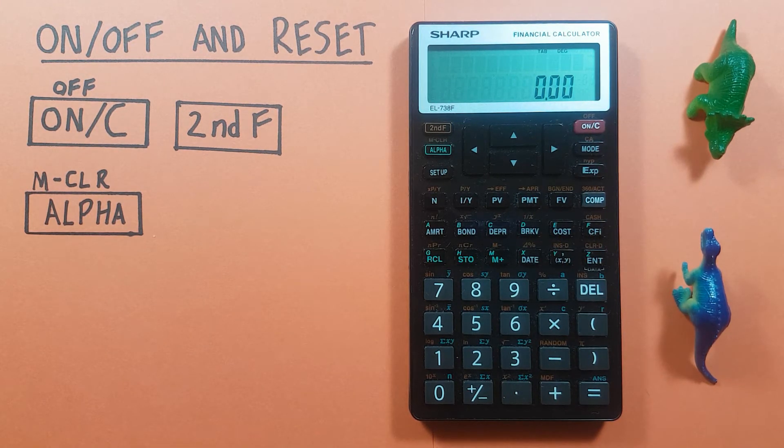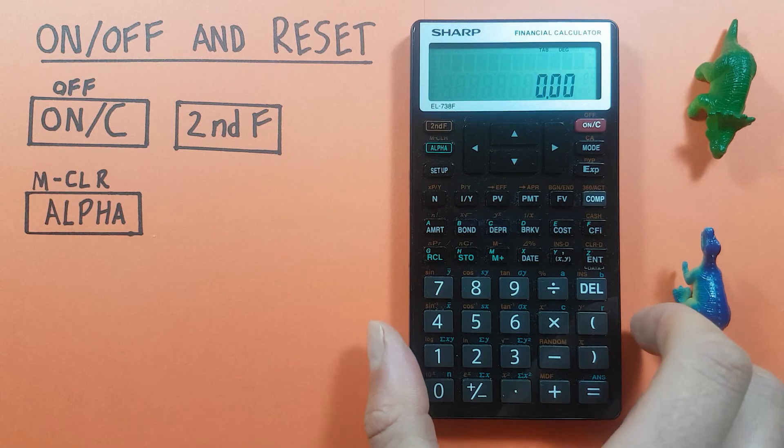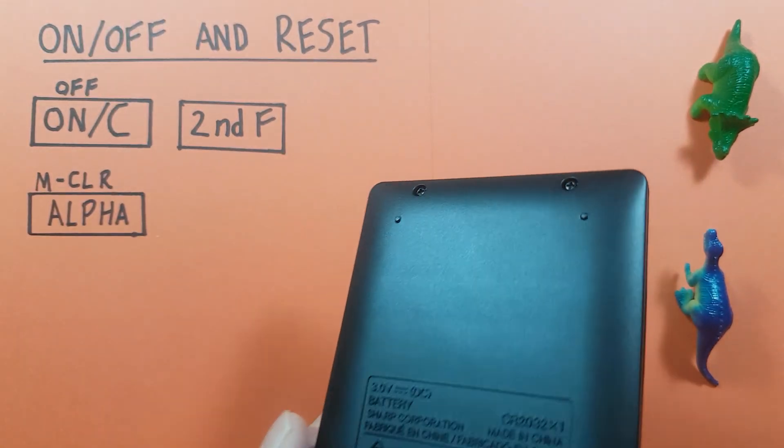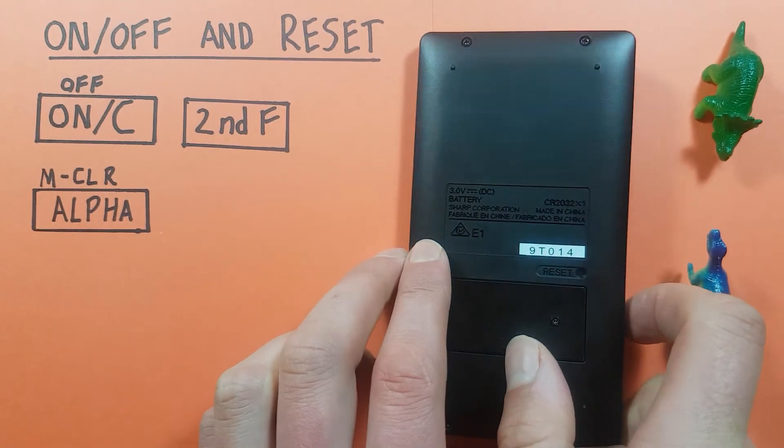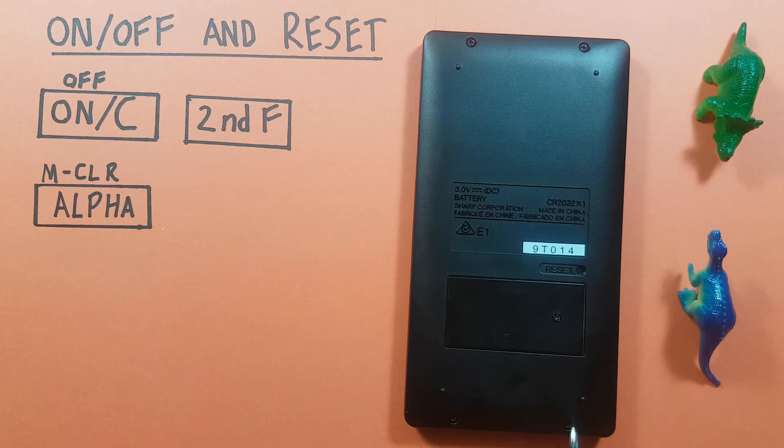If that doesn't work, we can also turn our calculator over. On the back here, there'll be a button that says reset. You'll need to use some pointed object like a pen. Make sure it's not something that'll break.